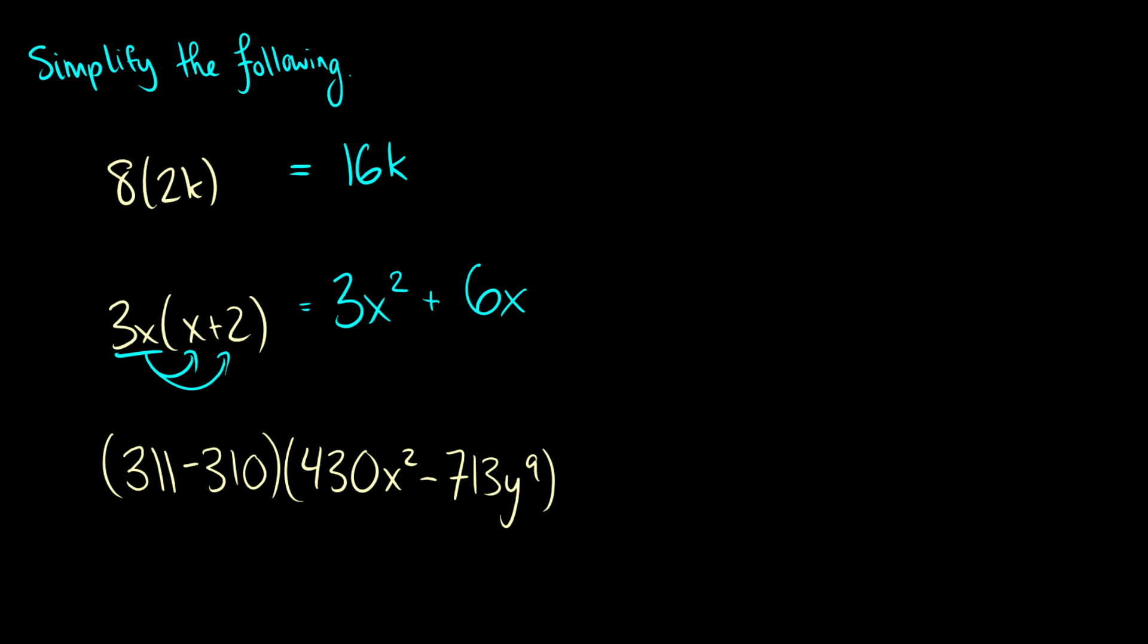Okay. Now what about this last one here? We have 311 minus 310 times 430 x squared minus 713 y to the 9. Okay. This could be difficult, or we could realize that 311 minus 310 is just 1. And what's 1 times anything? Well, the remaining bit is just going to be 430 x squared minus 713 y to the 9.